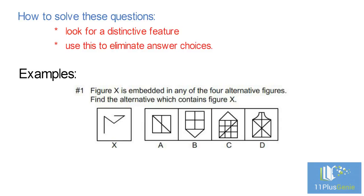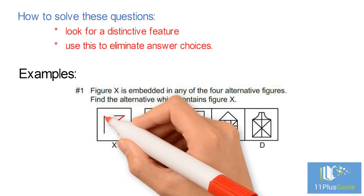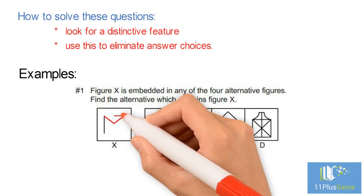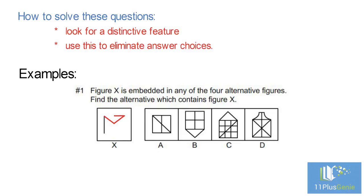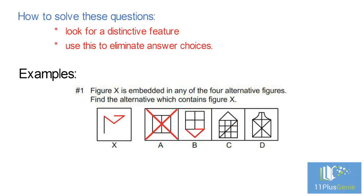A feature we can use is the V-shape with a horizontal line at the top. We can eliminate A because it does not contain this V-shape. In figures B and C, this V-shape with a horizontal line at the top is present,